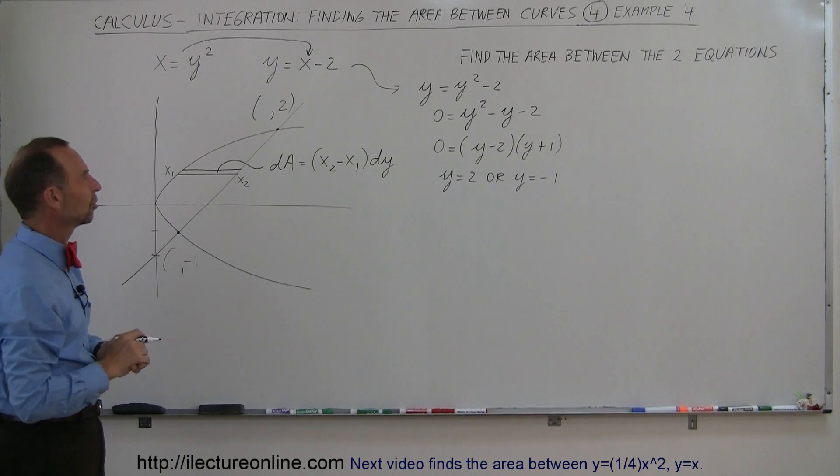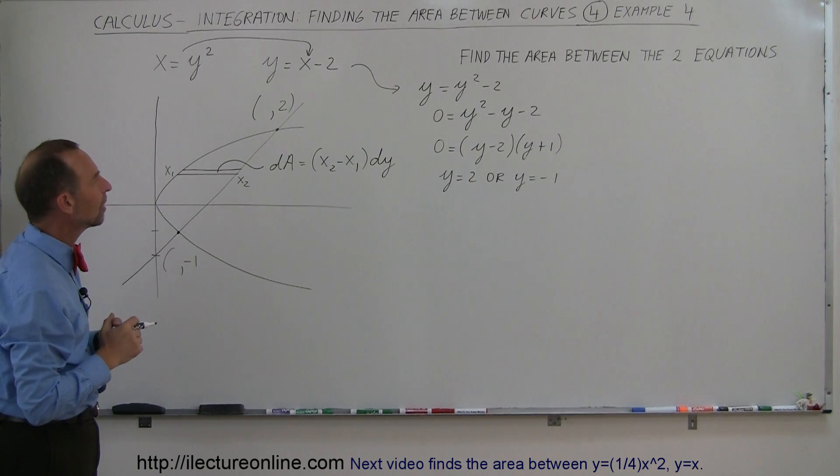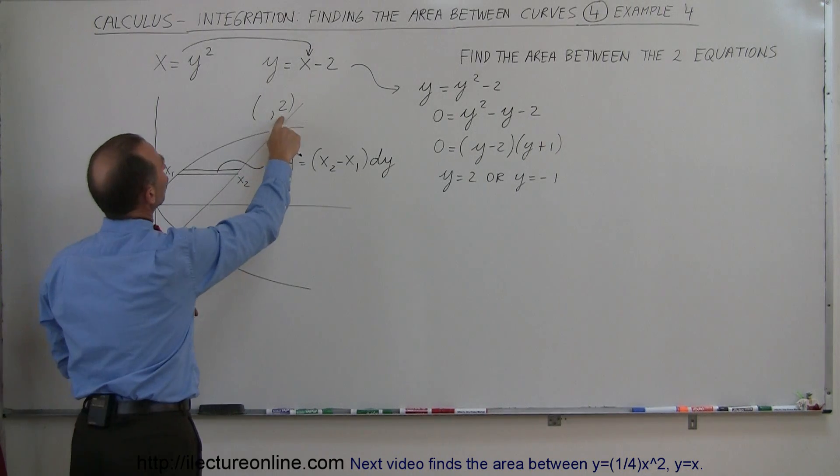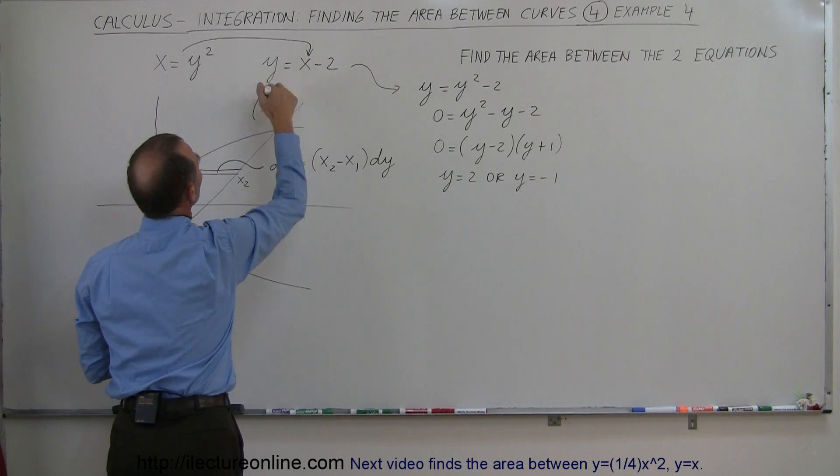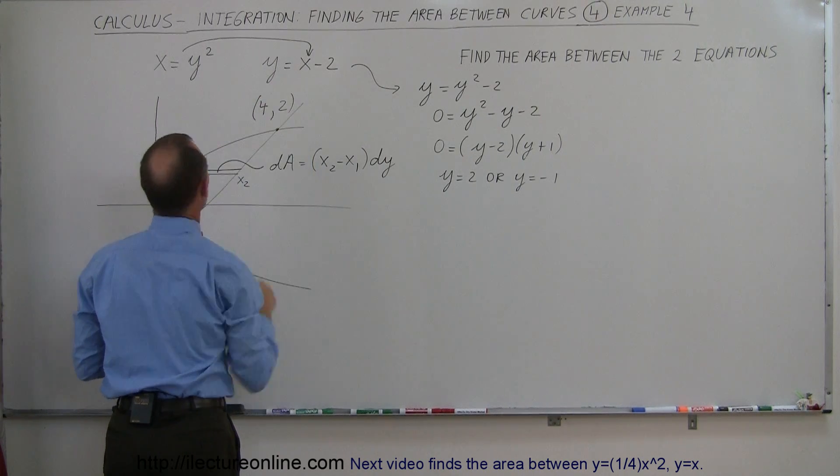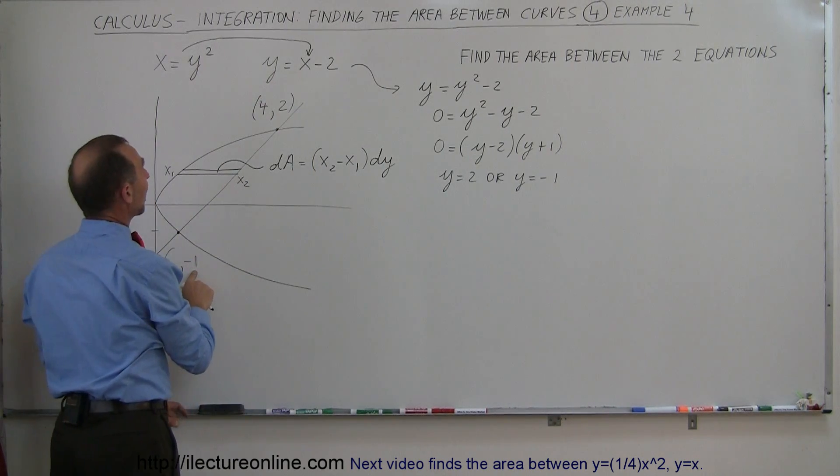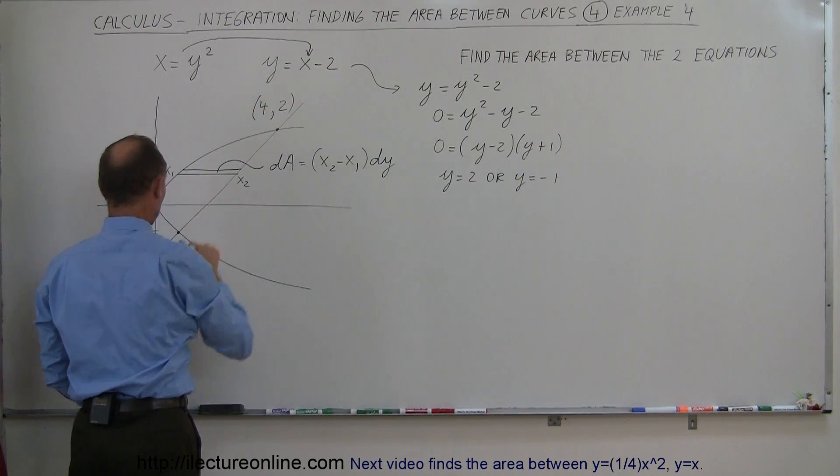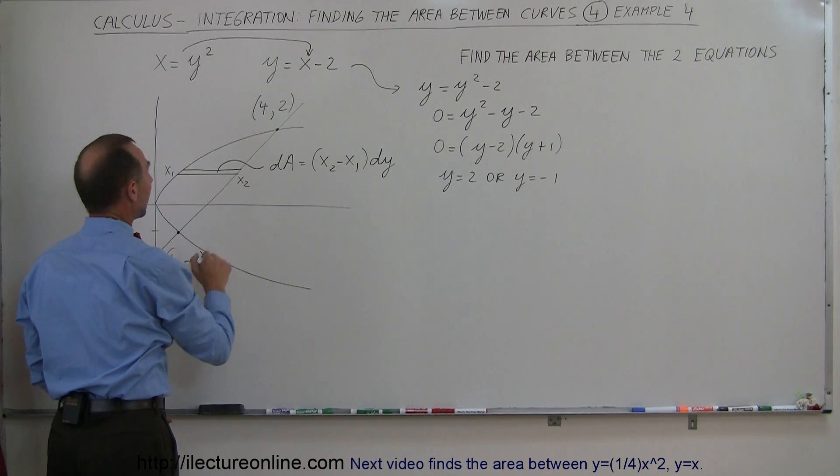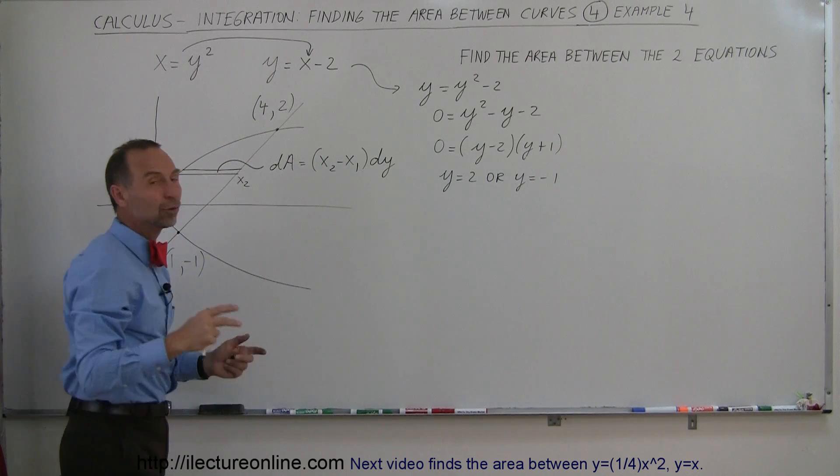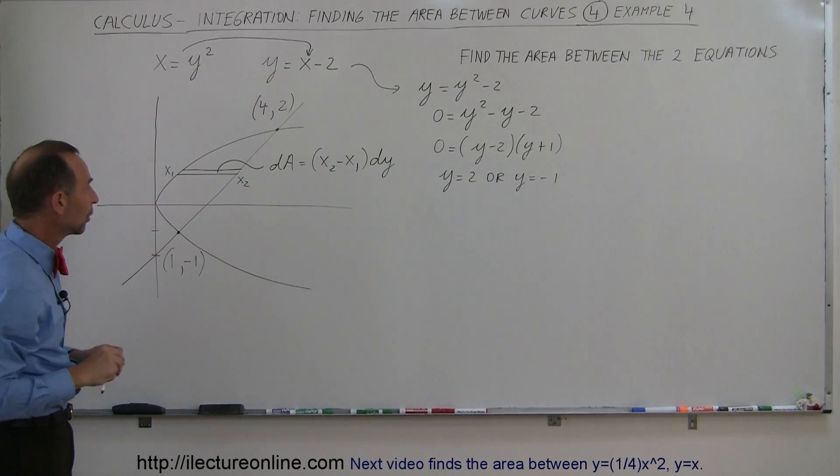Well, not really, but just to make it a little bit easier to see. If y is equal to 2, that means x must be equal to 4. I get that from that equation right there. And if y is equal to minus 1, that means x must be positive 1. So from this equation, it's easier to find the two x values of those two points where the two lines cross.